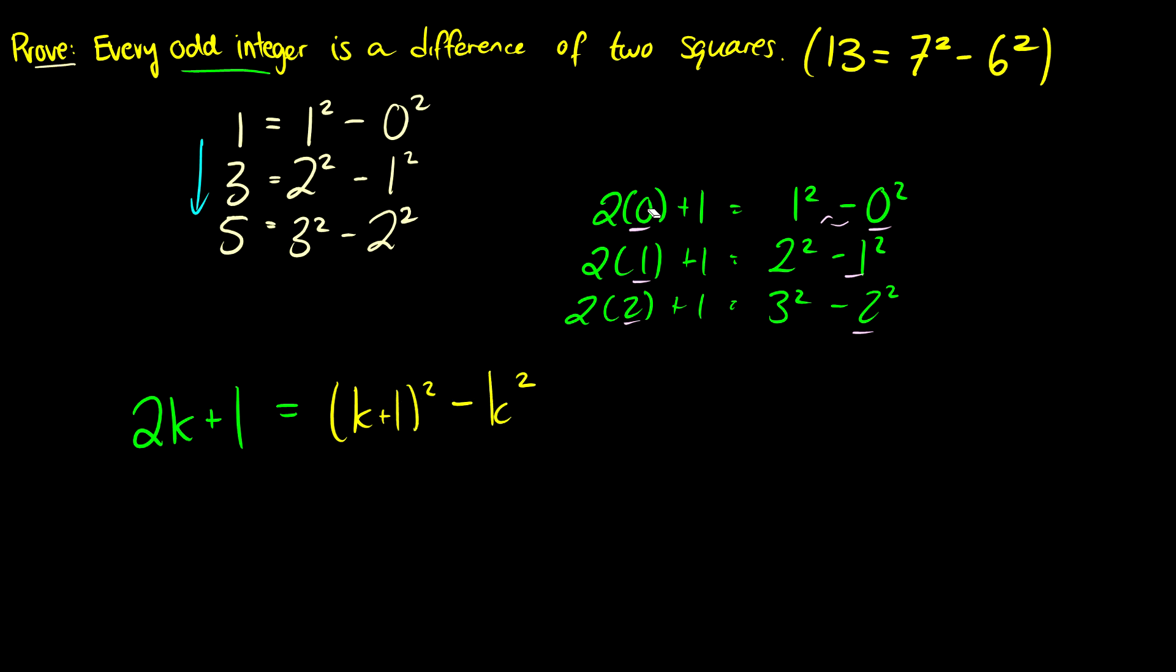So we can take a look here. If we take a look at our first example, 2 times 0 plus 1, we put a k there, then the 0 becomes a k, and then well what is 1? 1 is 0 plus 1, so that's going to be k plus 1. So we're going to check to see if this holds. Is this true?